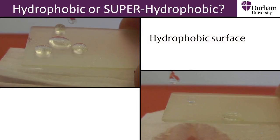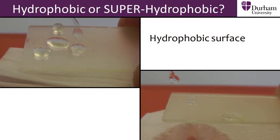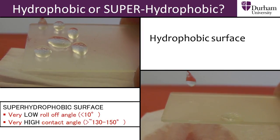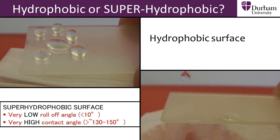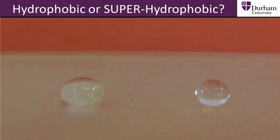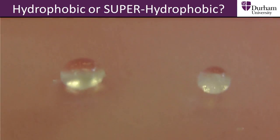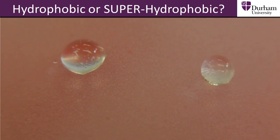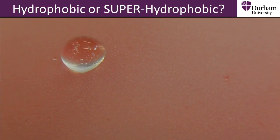The characteristic that separates superhydrophobic from hydrophobic surfaces is how easily water will roll away. For superhydrophobic surfaces, the angle needed to tilt the surface for a drop of water to roll off is very small — less than 10 degrees.